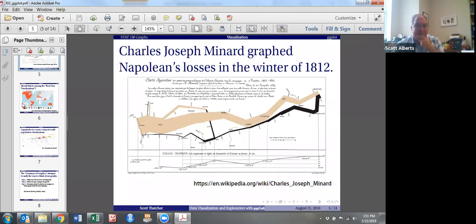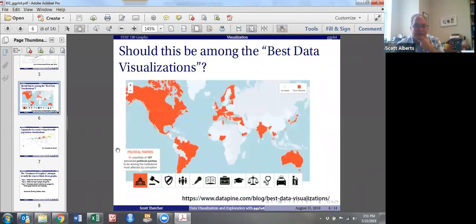Now, Dr. Thatcher includes one other graph here. And this is one that he found on the internet, and the idea of political parties. And this graph is very complicated, it's confusing, and it's hard to really tell what's going on.